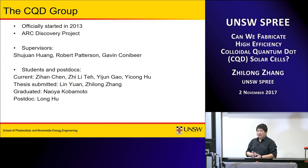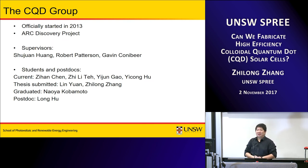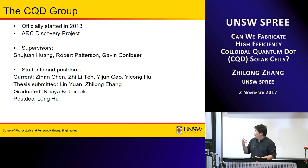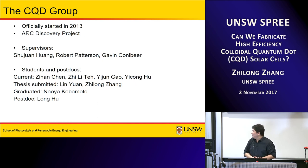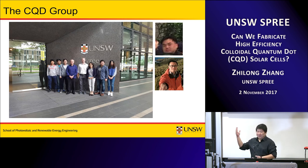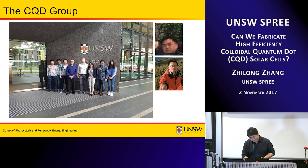As Sujan introduced, we officially started this project in about 2013, when Gavin, Sujan, and Rob got this ARC Discovery project funding. At that time we only had two students — Lin Yuan and myself — and our group has grown bigger and bigger since then. Now we have about seven people actively working in the lab: four students still doing their PhD, Lin and myself just submitted our thesis in August, one master student who just graduated last year, and also Long Hu who is a postdoc.